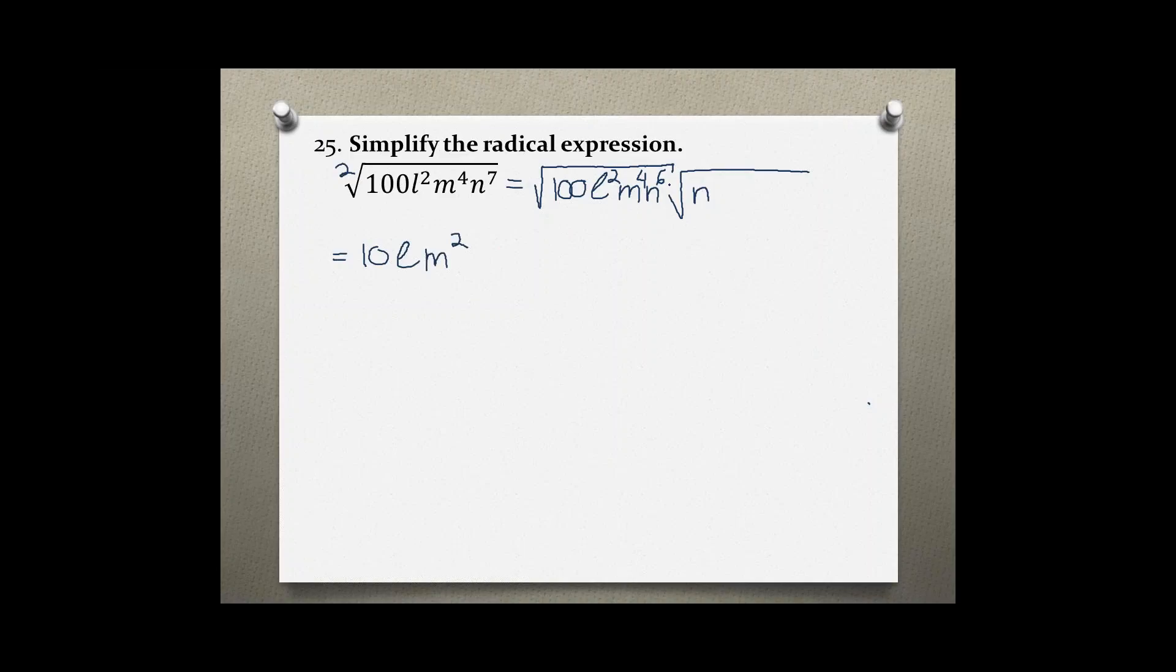N to the 6th, the square root is N to the third, because 6 divided by 2 is 3, and then we are left with 1N.